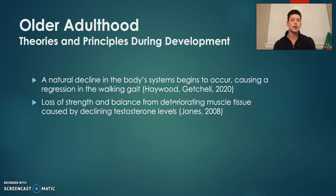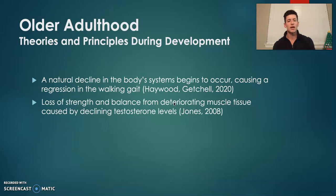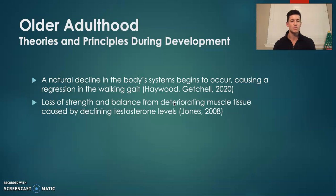Theories and principles during this stage of development: there is a natural decline in the body systems that begins to occur in older adulthood. This causes a bit of regression in the walking gait. There is a loss of strength and balance from deteriorating muscle tissue caused by a decline in things like testosterone levels as the muscular system, endocrine system, and nervous system all begin their decline.